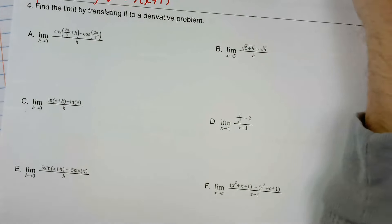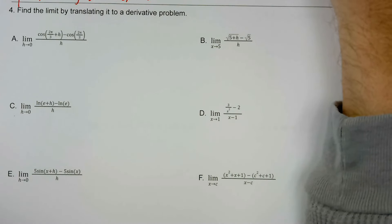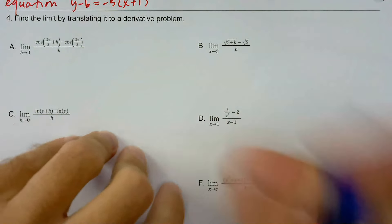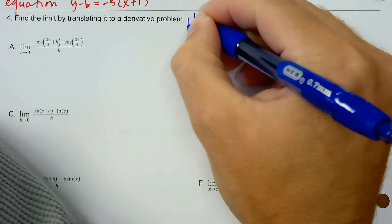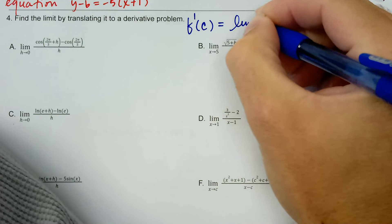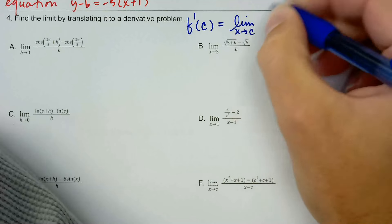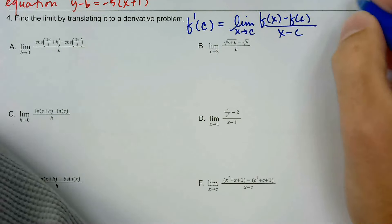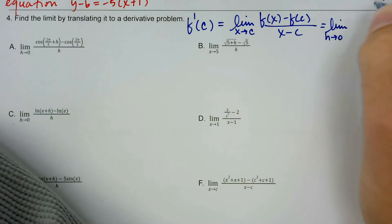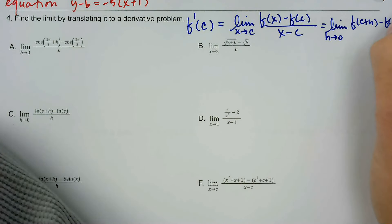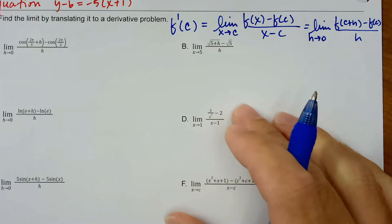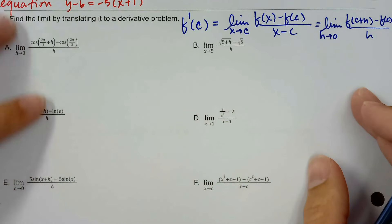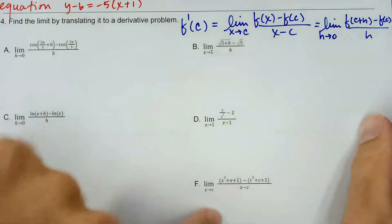We're going to evaluate the limit not by using algebra, but by translating it into a derivative problem. A definition of f'(c) is the limit as x approaches c of f(x) minus f(c) over x minus c; it's also the limit as h approaches 0 of f(c plus h) minus f(c) all divided by h. When we see h approaching 0 in the numerator, these are all going off of that second form, whereas those others are getting at the first one.